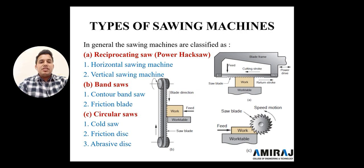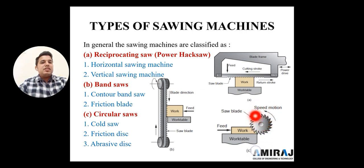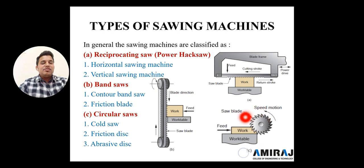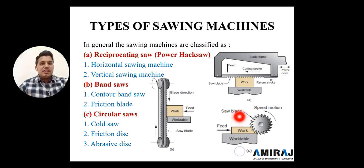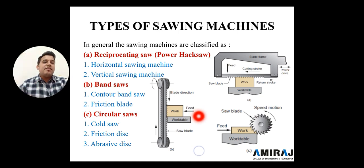The last type is the circular saw. First is the cold saw, then friction disc, and abrasive saw. The cold saw has teeth, whereas in abrasive there are no teeth. It will rotate clockwise or anti-clockwise and feed from one direction. Similar to milling, we can say there is an up-swing and down-swing. These are the three basic types, classified by machine operations, orientations, and application.